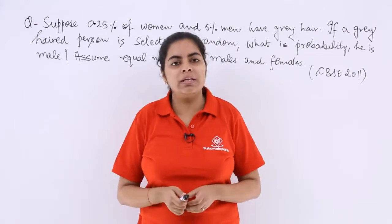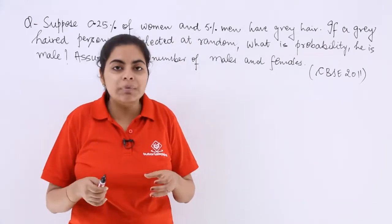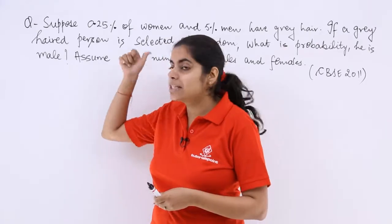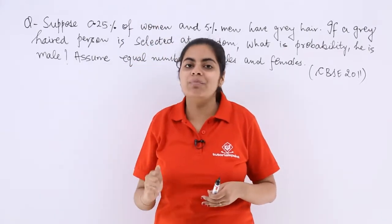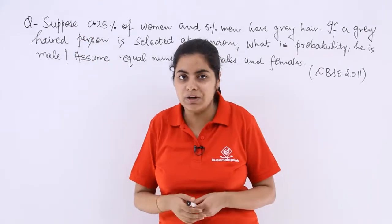Now it has also been given that the probability of male person having grey hair is 5%, means 5 over 100. Probability of female person having grey hair is 0.25 over 100.